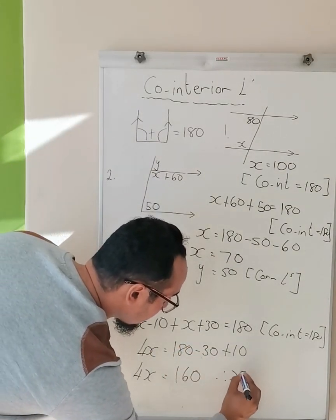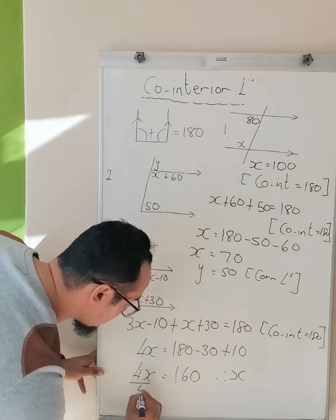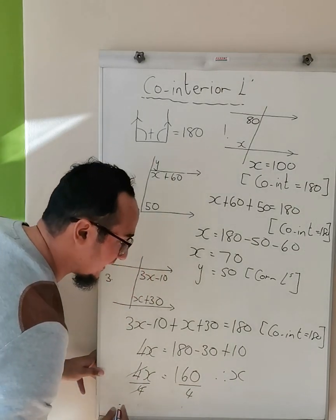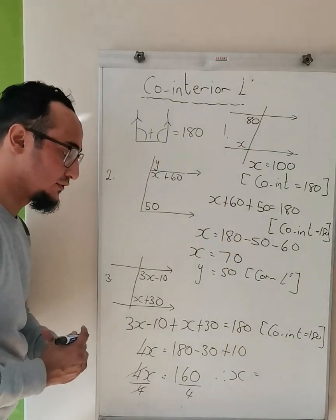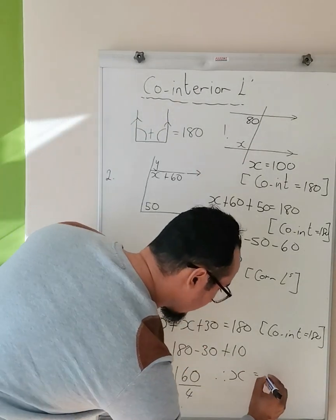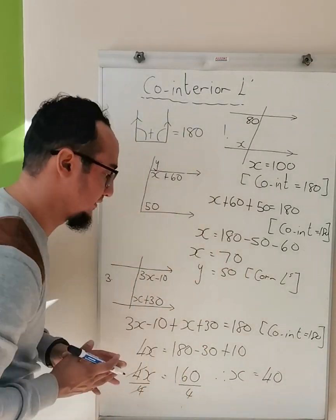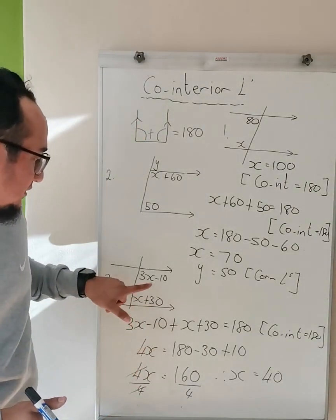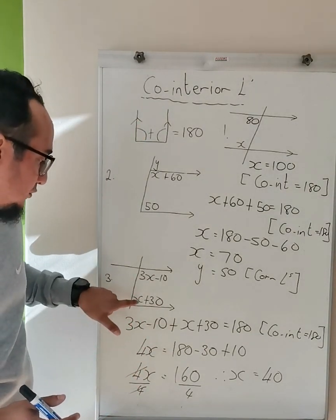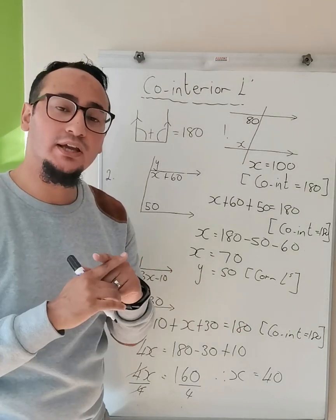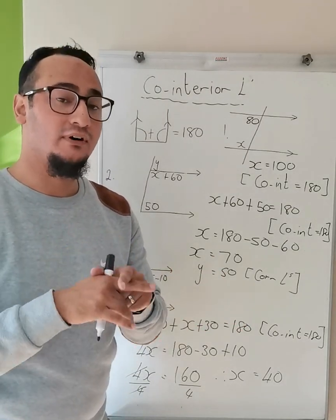Therefore, divide by 4 on both sides. x is equal to 40. Here we go. And how do I double check it? Substitute 40 in there, substitute 40 in there, add them all up together. Then I will find that it's equal to 180 degrees.